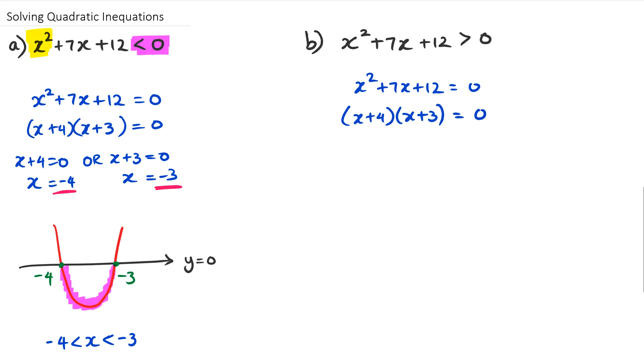So we've got (x+4)(x+3) equals zero. By the way, guys, I've used the same question, so all the processes are still the same. So we're still going to do x+4 equals zero or x+3 equals zero. So therefore, we've got our two x-intercepts, which is negative four and negative three.